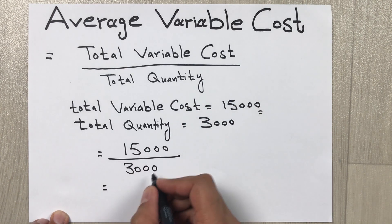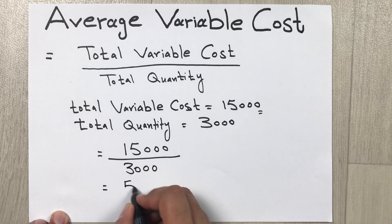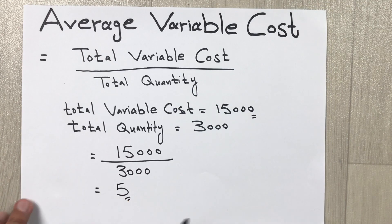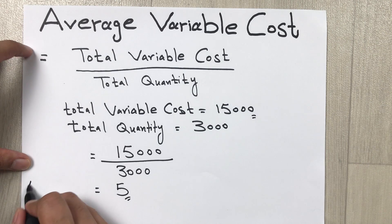When we do this calculation, our answer will be 5. So this is our average variable cost.